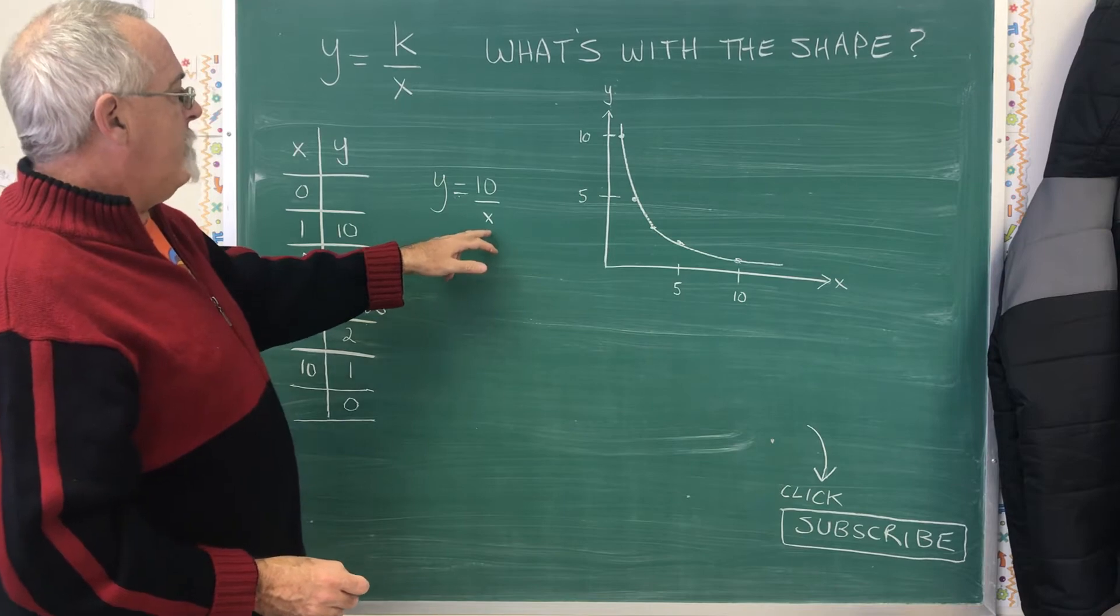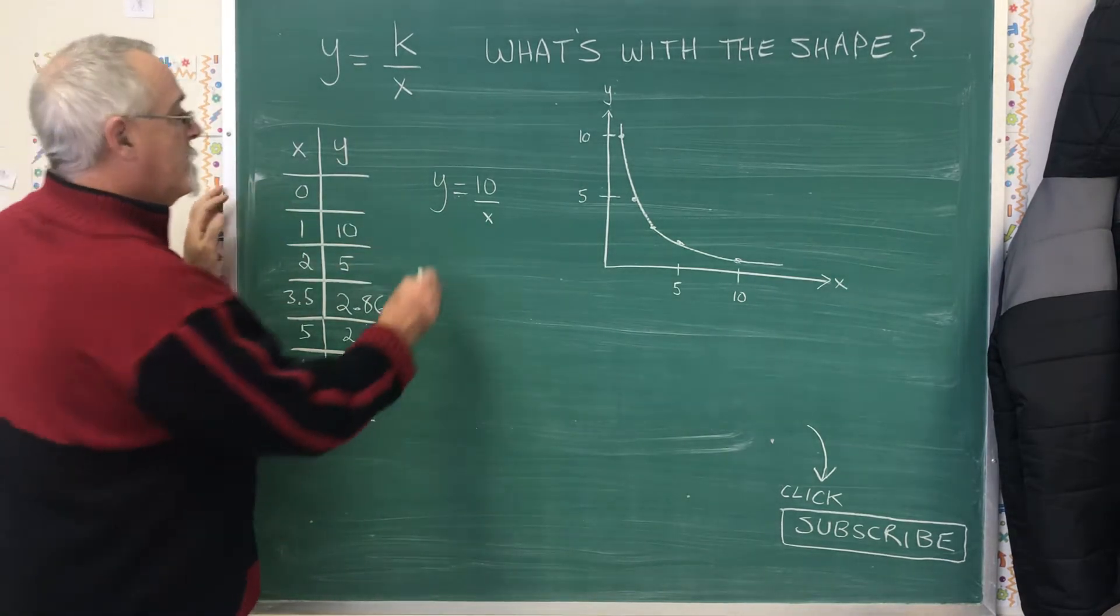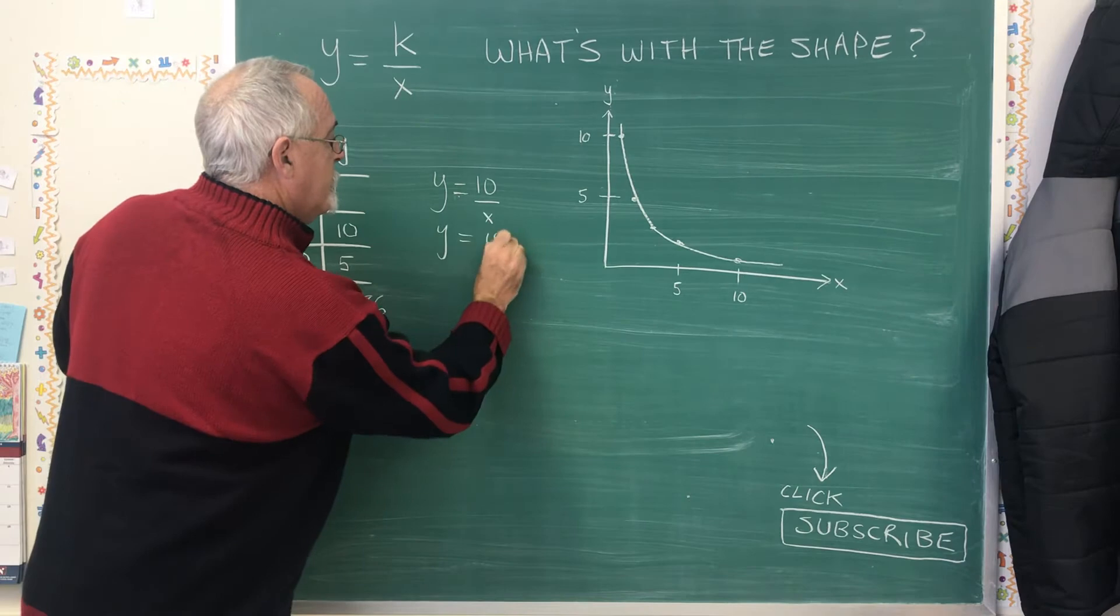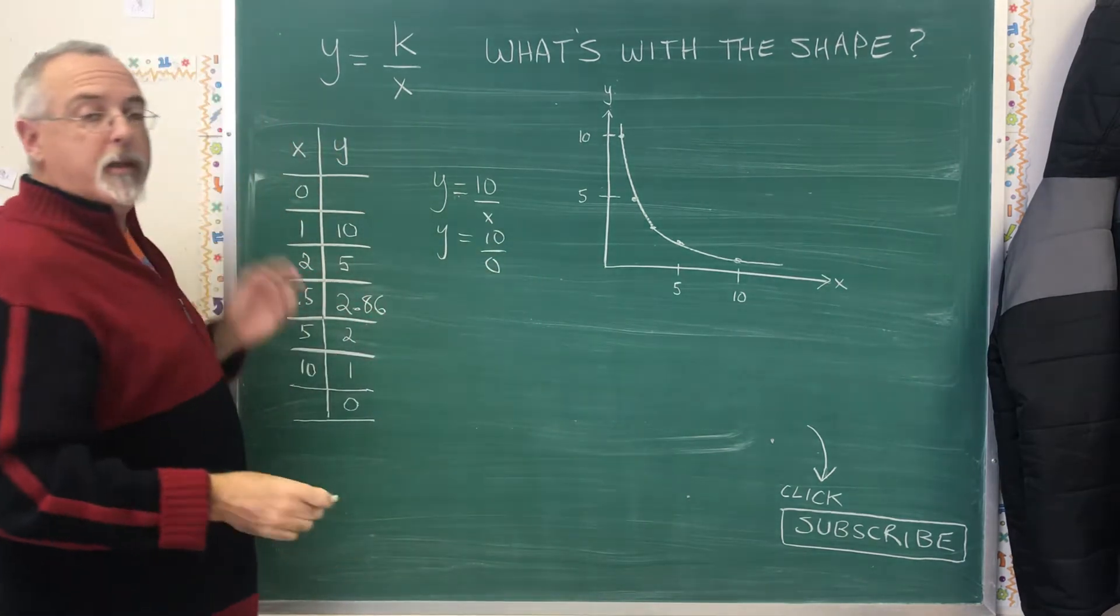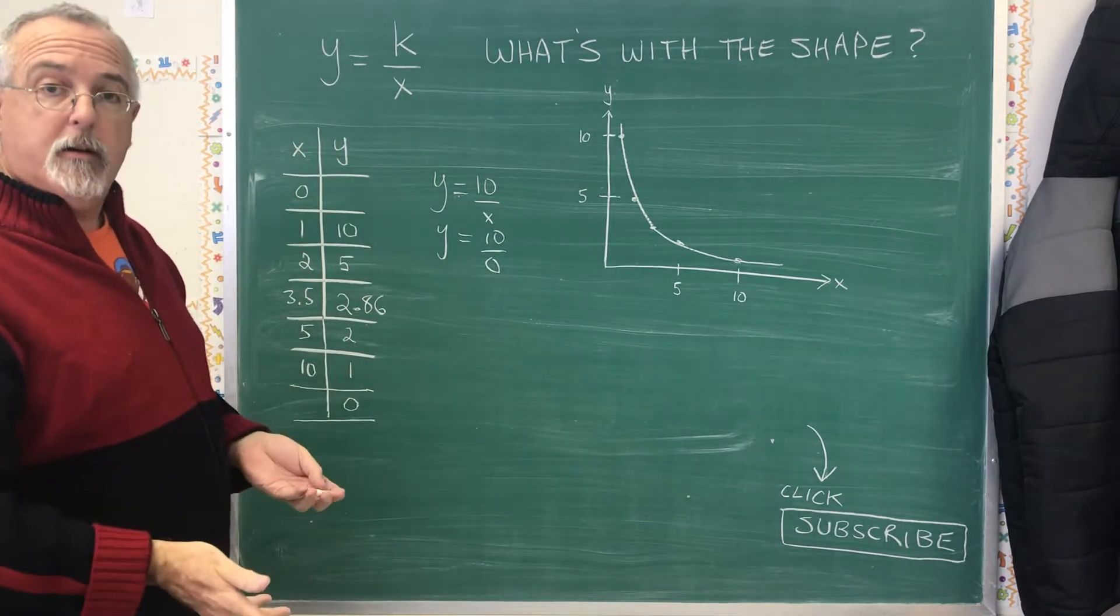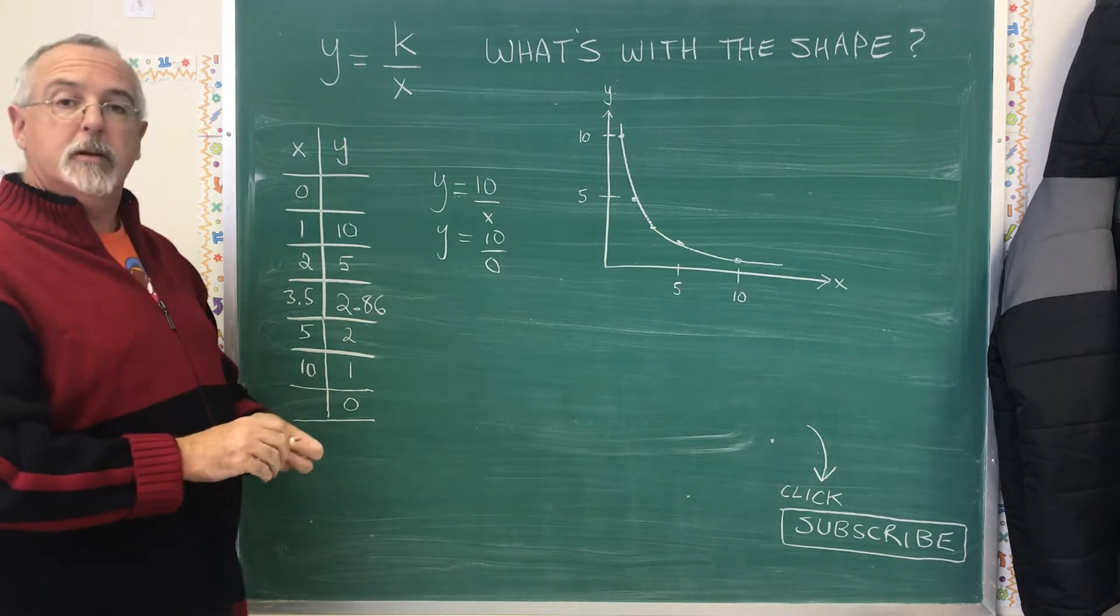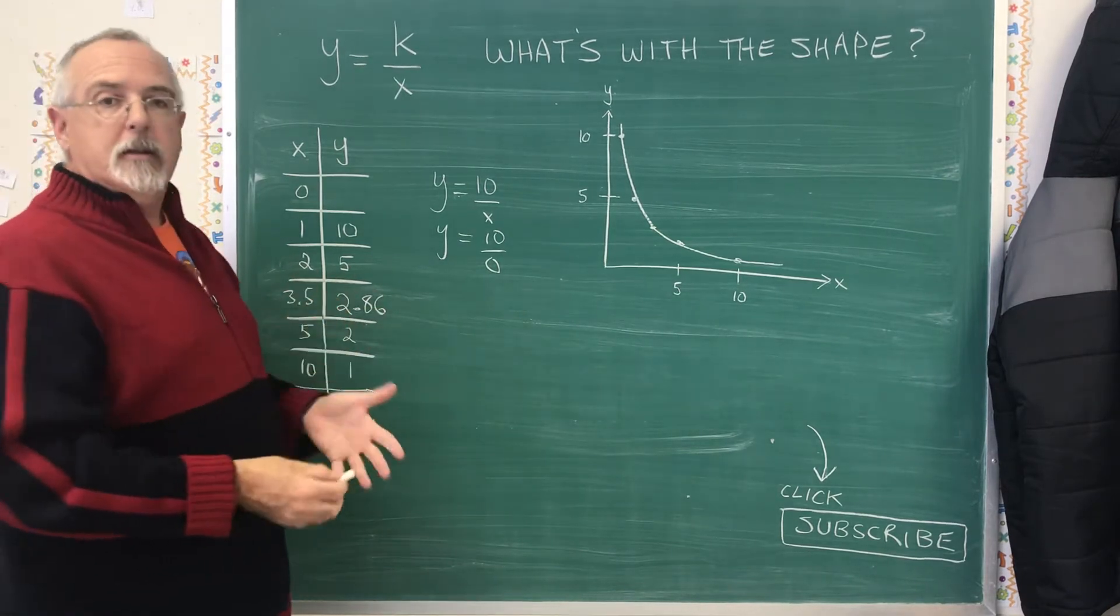And the reason it's never going to touch it is this point right here. If x is 0, I have y equals 10 divided by 0. And if you try that in your calculator, you will get an error. And we know in math we can't divide by 0.